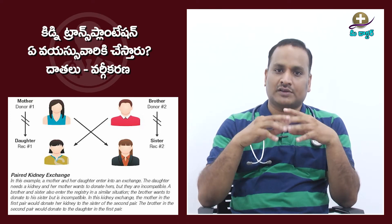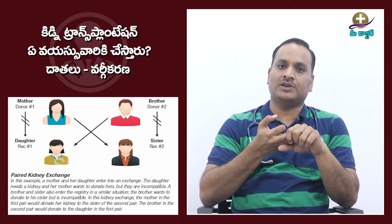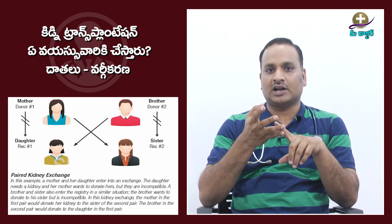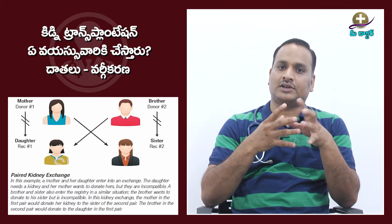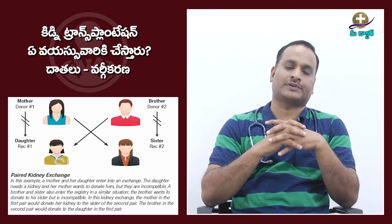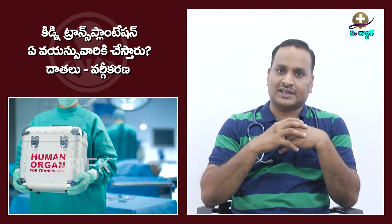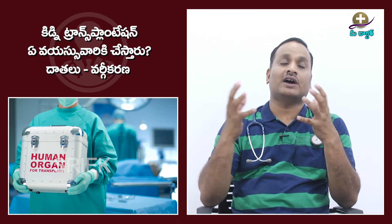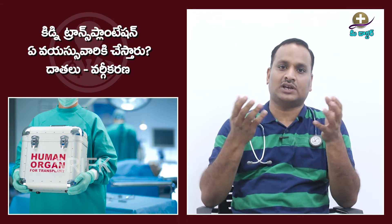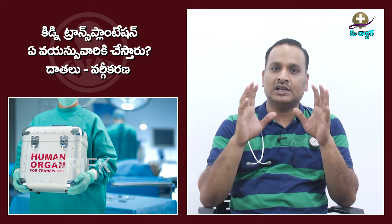Live donor transplant can be related or unrelated. Related means related to family — brothers, sisters, parents, etc. Unrelated means not biologically related to family, such as a spousal relationship. Life unrelated transplant is biologically unrelated to the recipient.